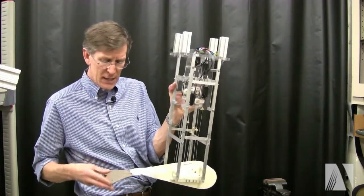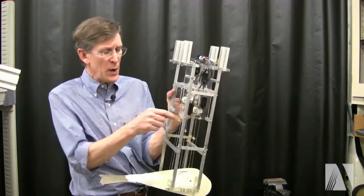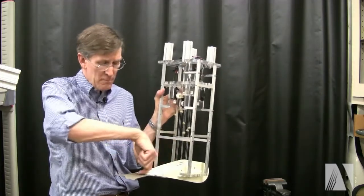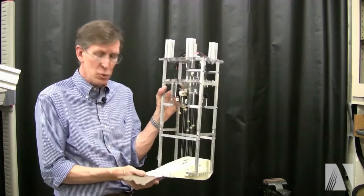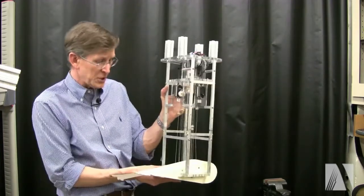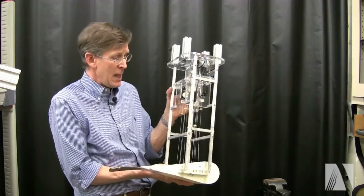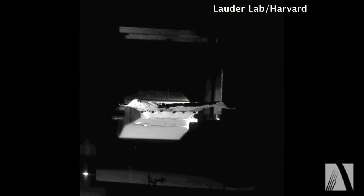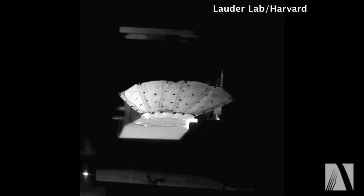The tail fin rays here are actuated through little tendons which pierce through the body, come back and allow us to move the tail under computer control and to measure the forces that the robot generates during swimming and to see the effect of different types of movements on the fin and their effect on force generation.